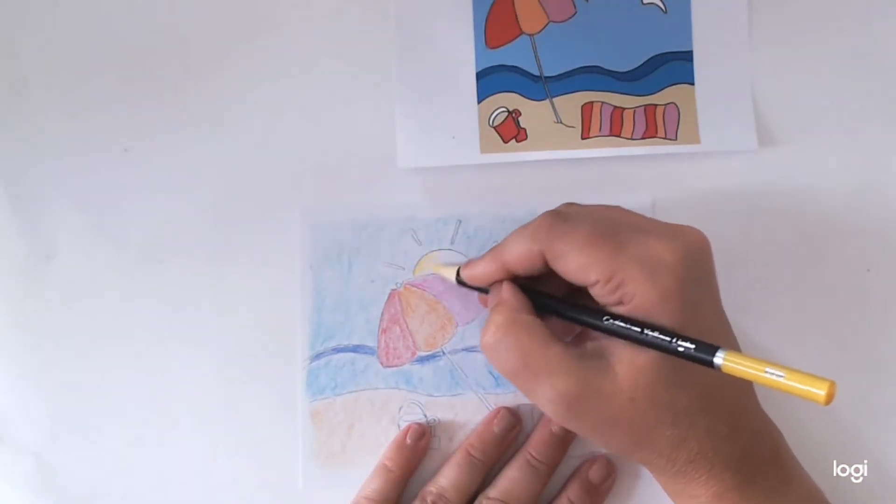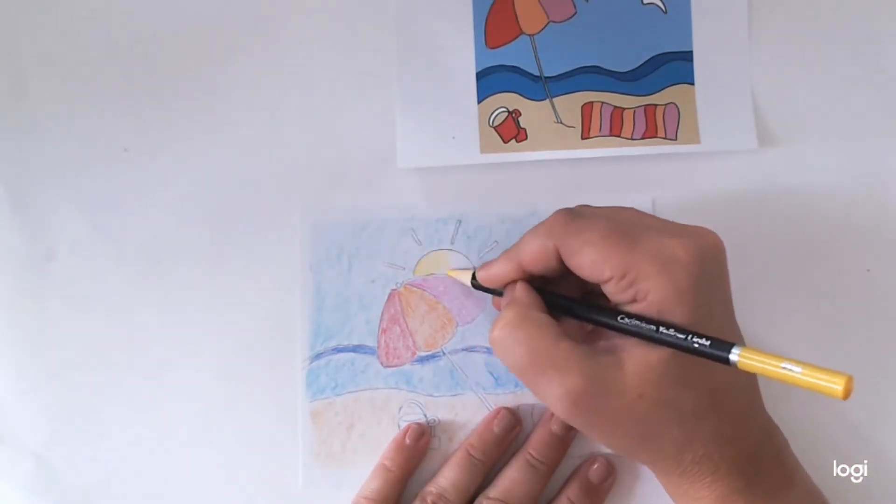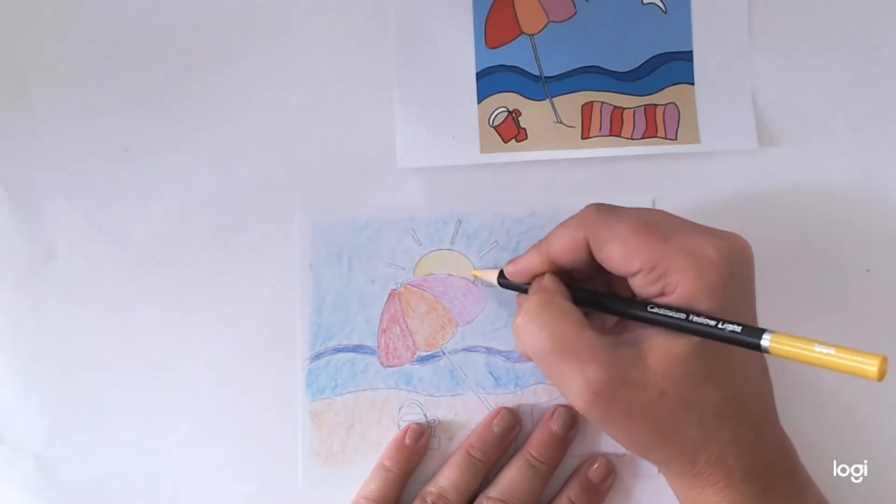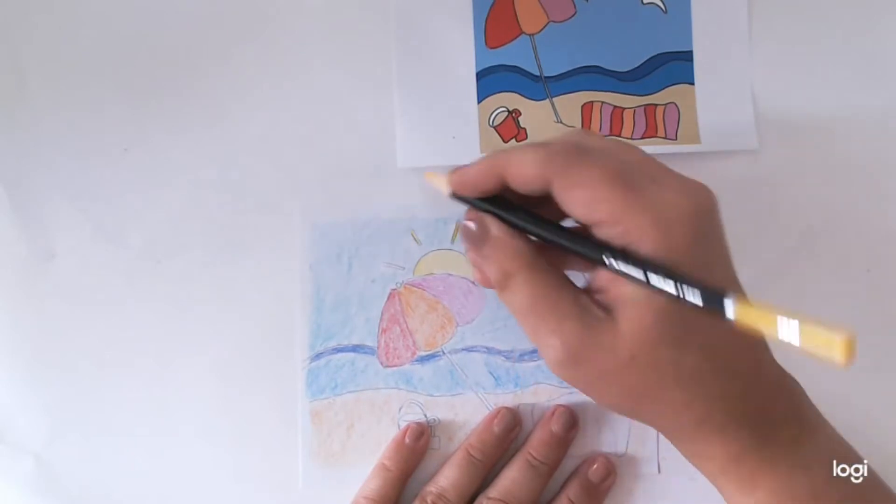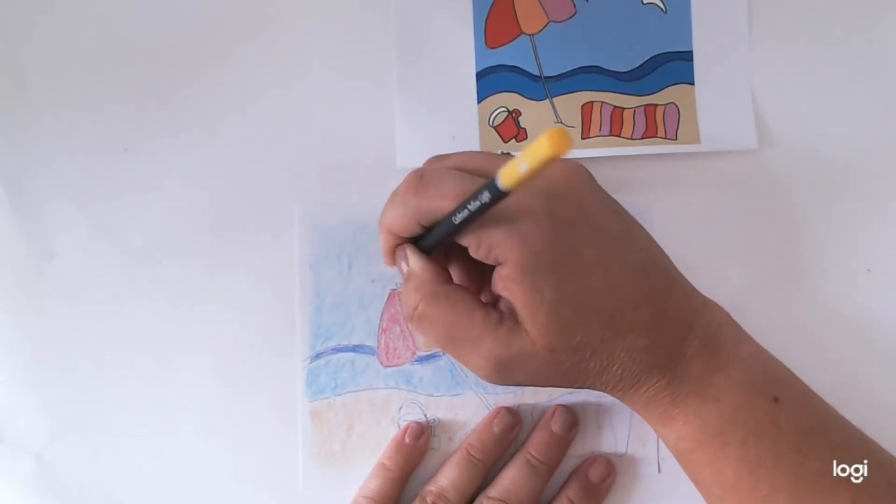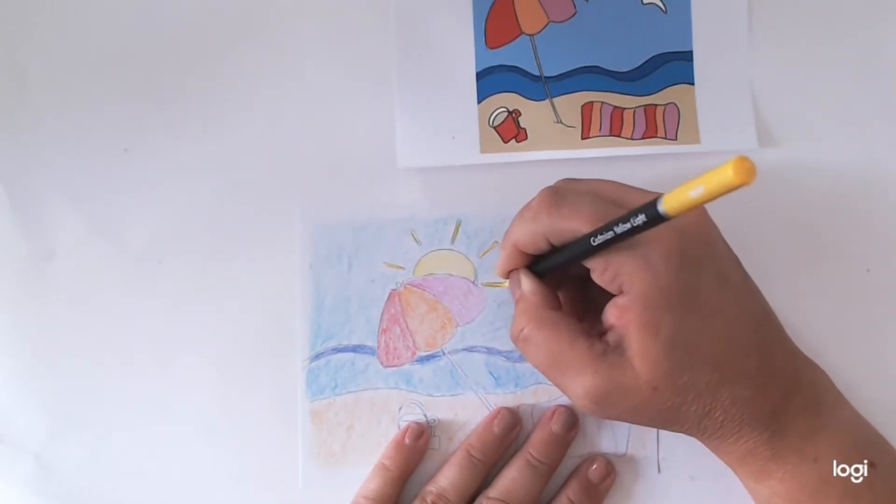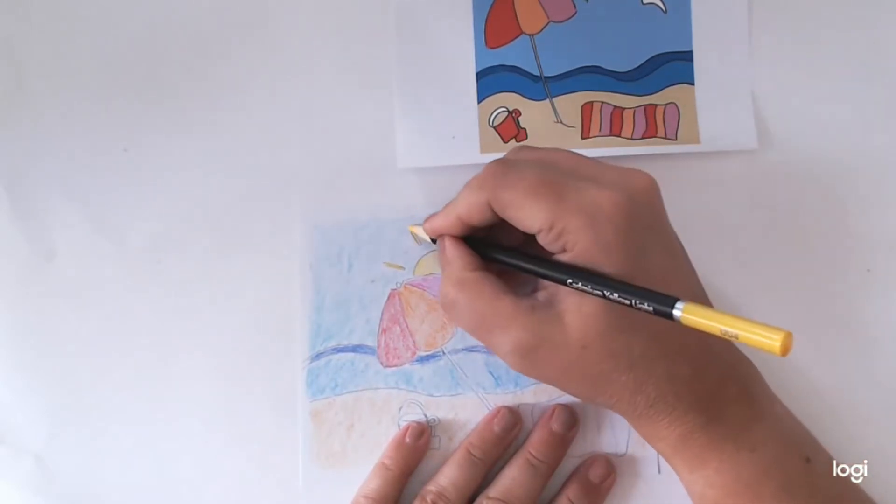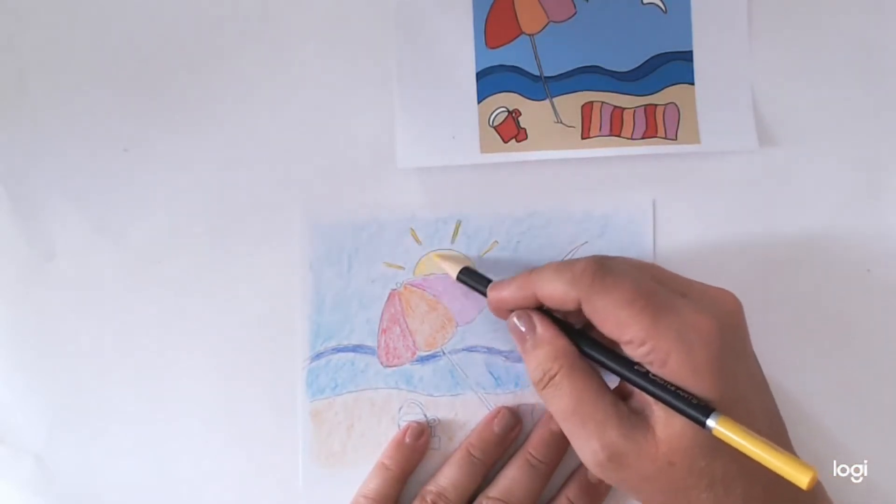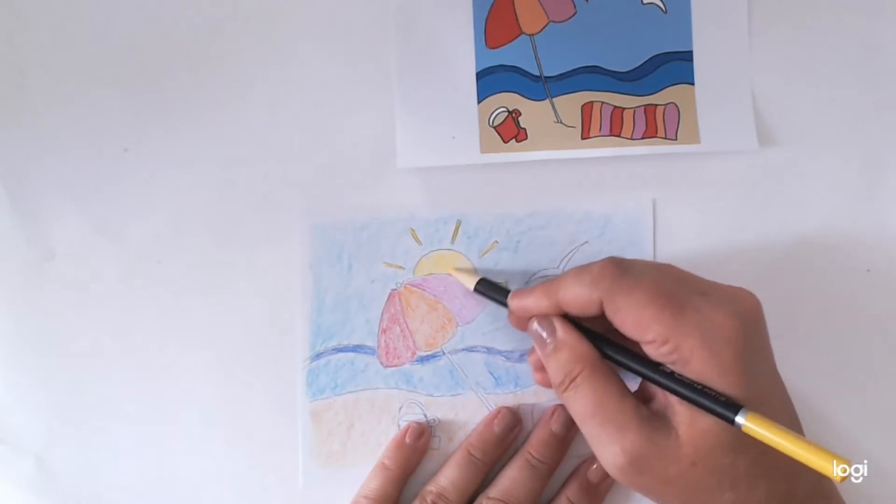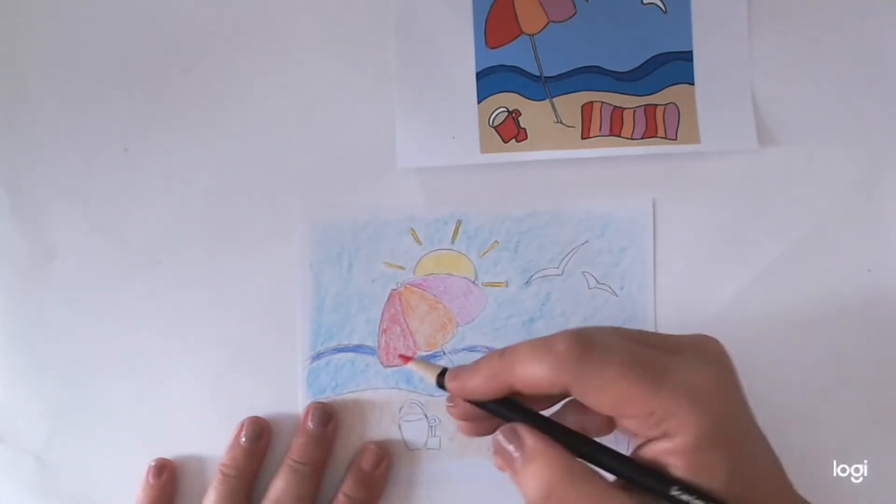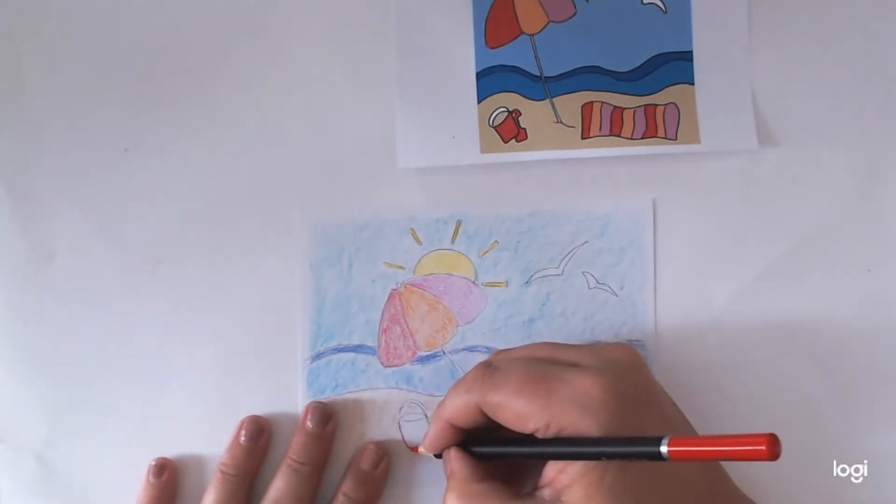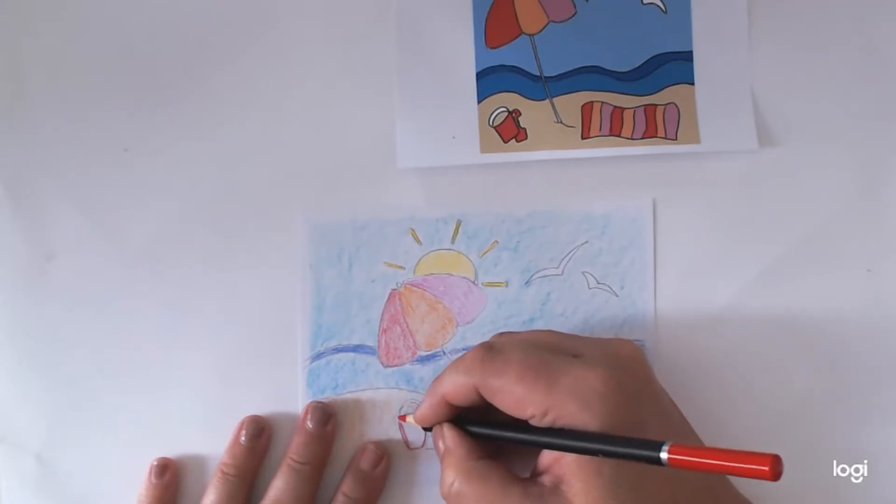Going in now with my nice bright yellow for my sunshine. There we go, nice bright yellow. Now, I'm pressing hard there because I've already gone down with the blue and silly me, I've gone over it, which means it's going to make a bit of a greeny yellow, but never mind. Blue and yellow make green. I'm going to put a bit more pigment down on the sun. I'm still going around in circles.